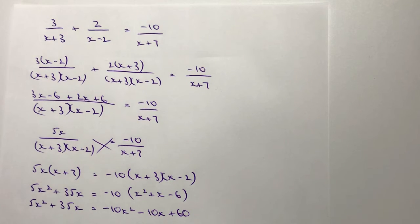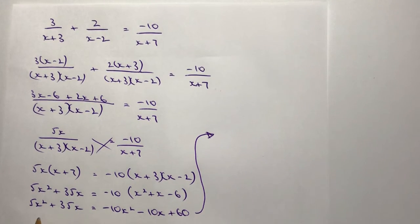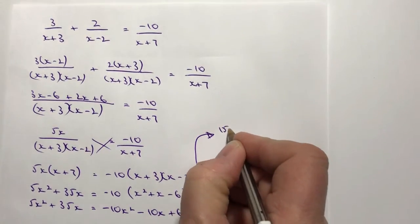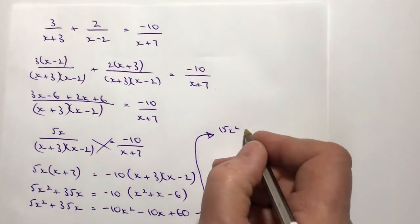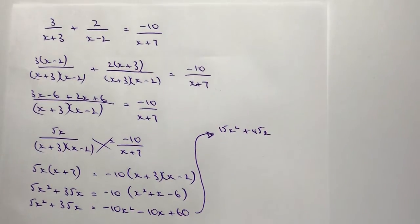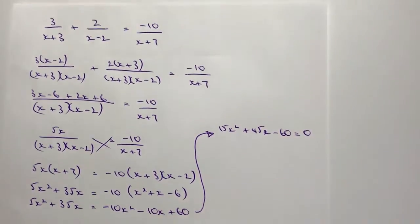Now, in order to factorize, what I need to make sure is that everything equals 0. So if I now move all of these terms over to the other side, what I end up with is minus 10x squared over here gives me 15x squared. Minus 10x here, bring it over, that's going to give me plus 45x. And then I've got plus 60, going to bring it over here, that's going to give me minus 60, and that equals zero.